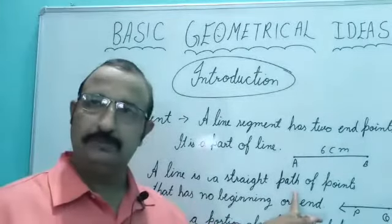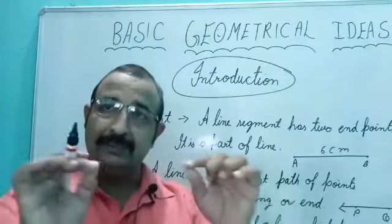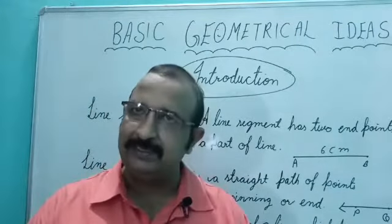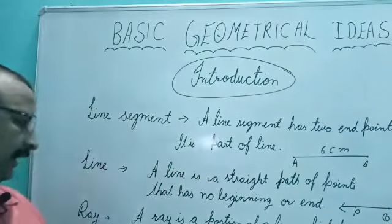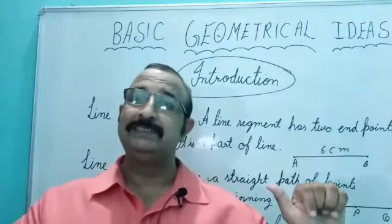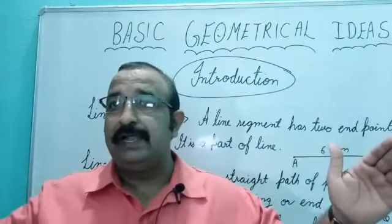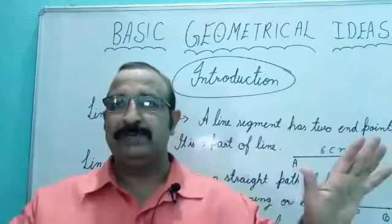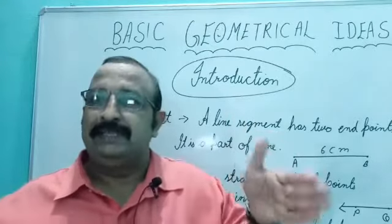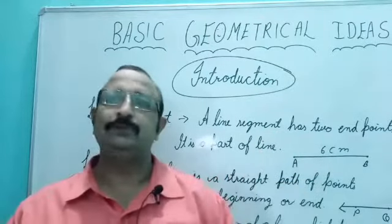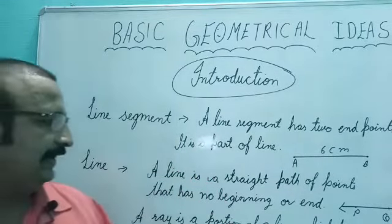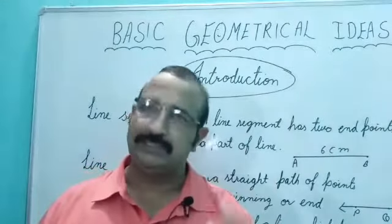Then come to line. A line is a straight path of points - points joining together forms a straight path that has no beginning or end. Which has no start, which has no end. Ray - a ray is a portion of line. Ray is a portion of line. Line can be extended on both sides infinitely. But ray can only be extended from one side. On one side there is stoppage, you can say, either it is a beginning or it is an end. One side is fixed. Ray is a portion of a line which has one end point and extends forever in one direction.